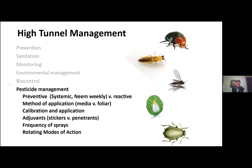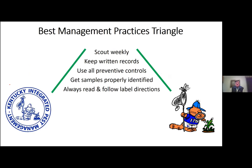Rotate your modes of action — each of these pests in the high tunnel has been more prone to resistance development. And lastly, just as Dr. Gauthier had her disease triangle, here is my insect triangle: Scout weekly. Keep written records. Use all preventive controls — in the high tunnel, a lot of those will be sanitation. Get your samples properly identified. And always read and follow label directions. Thank you.